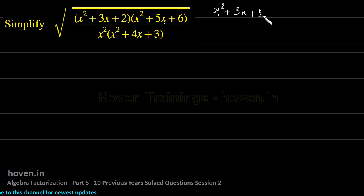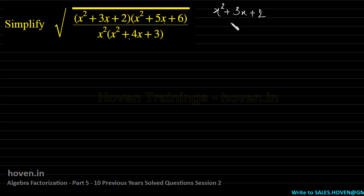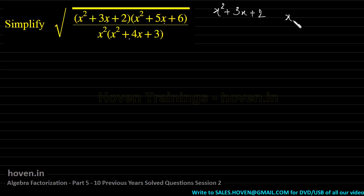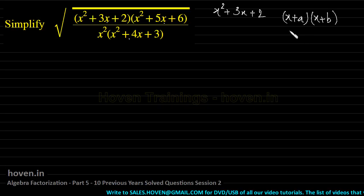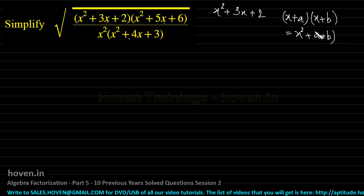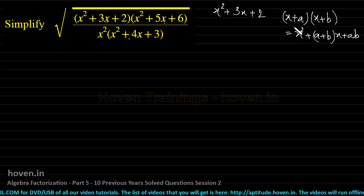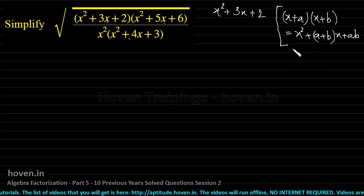We will start with our first expression. This is a quadratic expression and there are many ways to factorize it — we can use the factor theorem or observation. When you have a quadratic of this type, you can use this identity: (x+a)(x+b) = x² + (a+b)x + ab. This identity can always be very efficiently used.